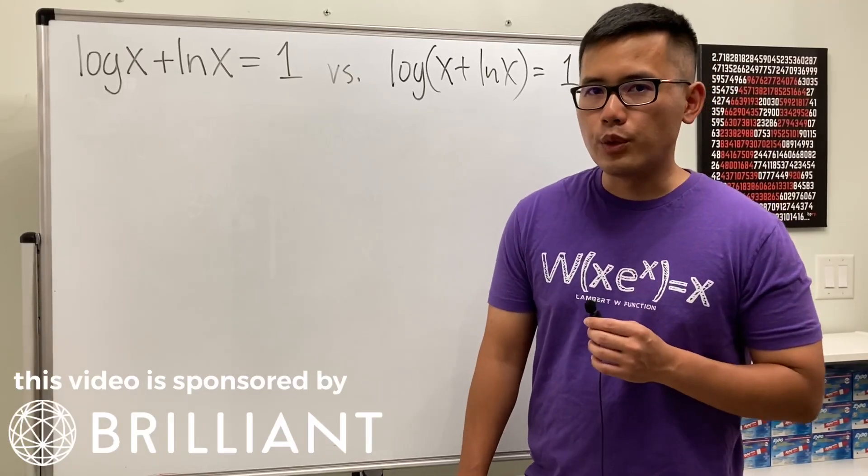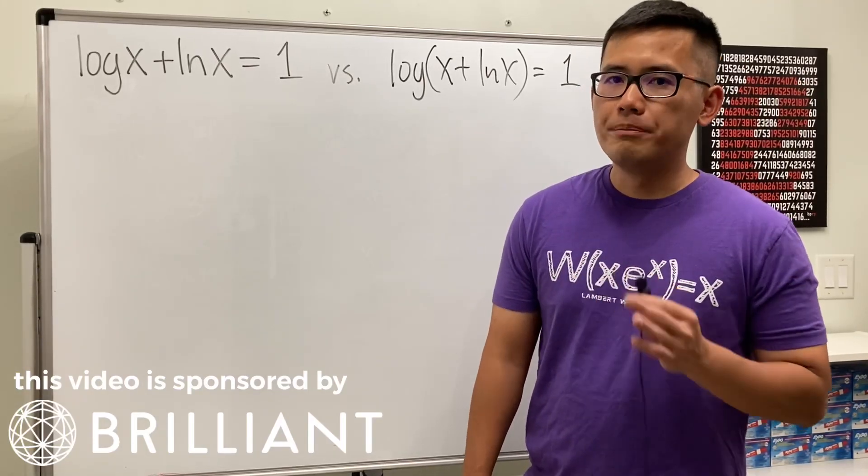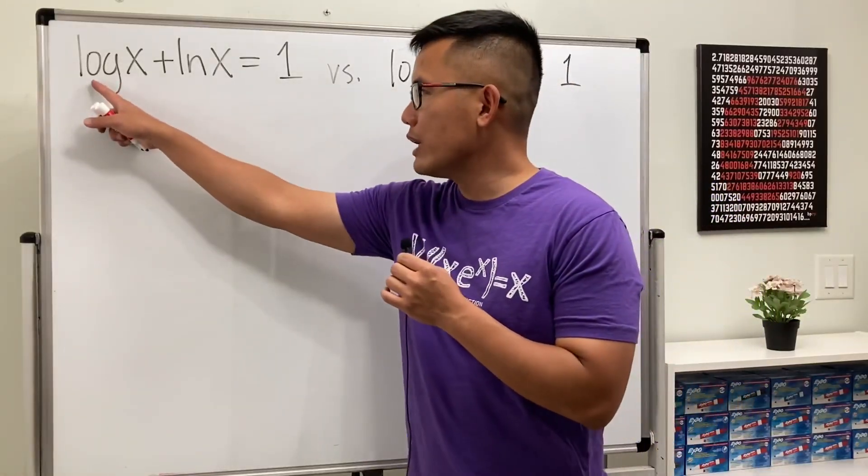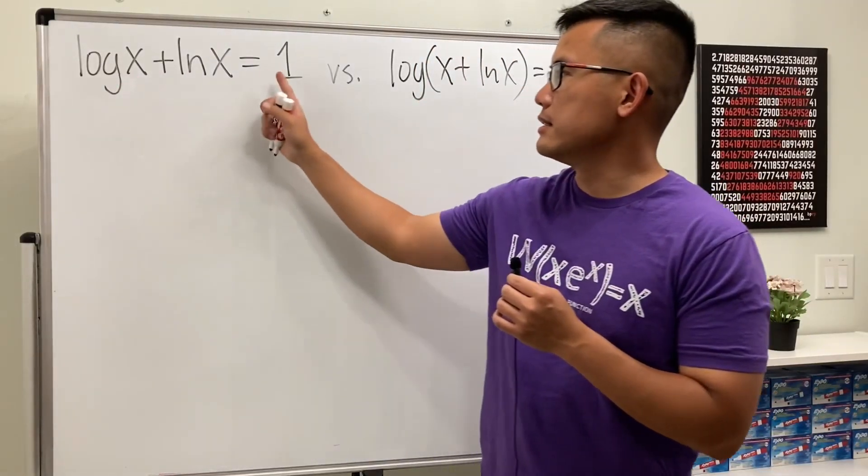So how do we solve logarithmic equations when we have different bases? So you see, for this one, we have log of x plus ln of x is equal to 1.